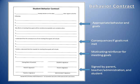As shown here, a student behavior contract can be used to help students be accountable for their own behavior, because there will be appropriate behavior goals set by the student, the teacher, and the parent that will be agreed upon. They will also agree upon consequences for the student if their goals are not met, and the student will receive motivating reinforcers for meeting their goals. Just as any contract, this will be signed by the parent, teacher, and the student.